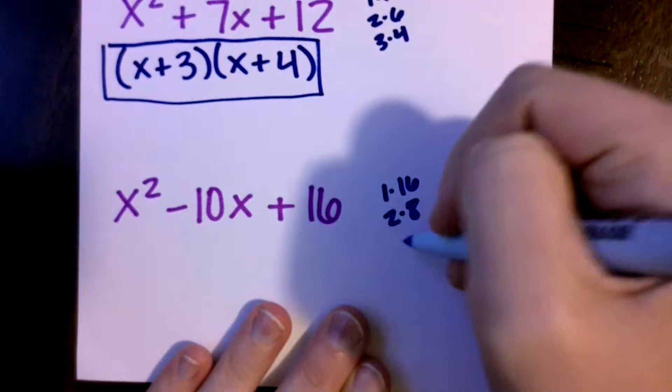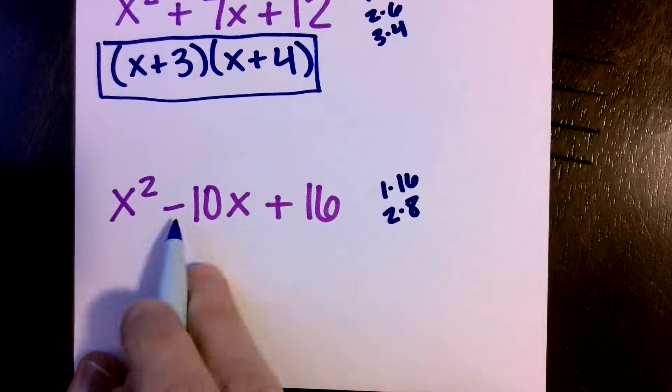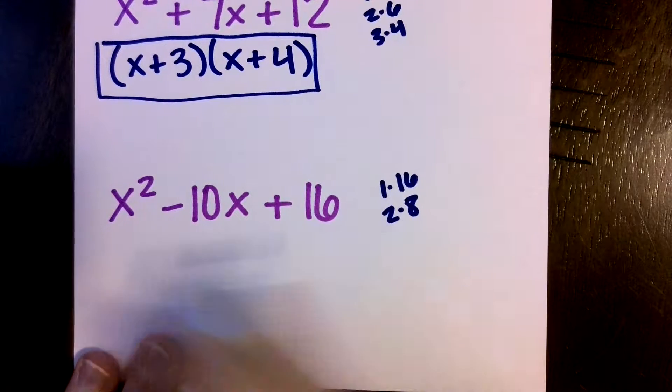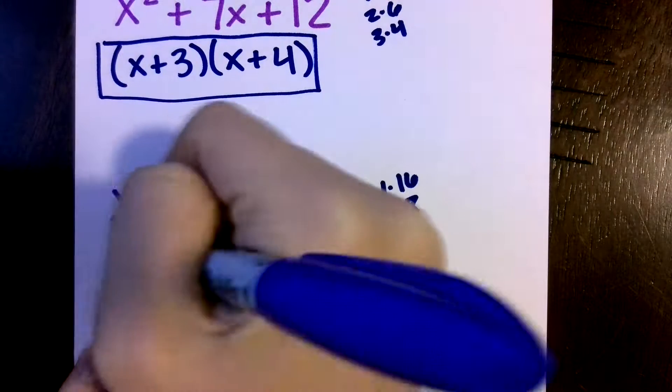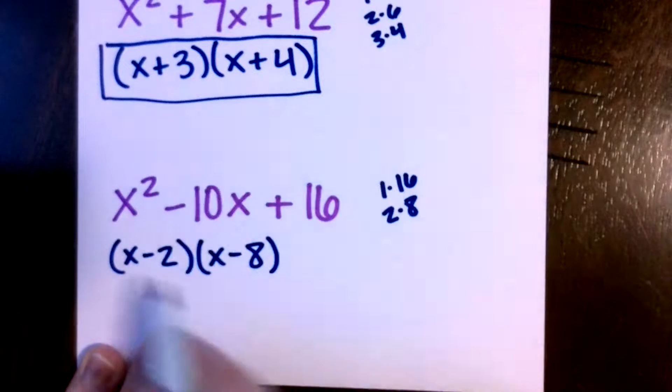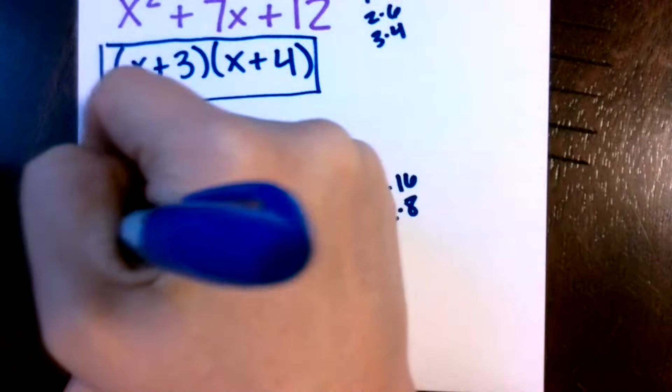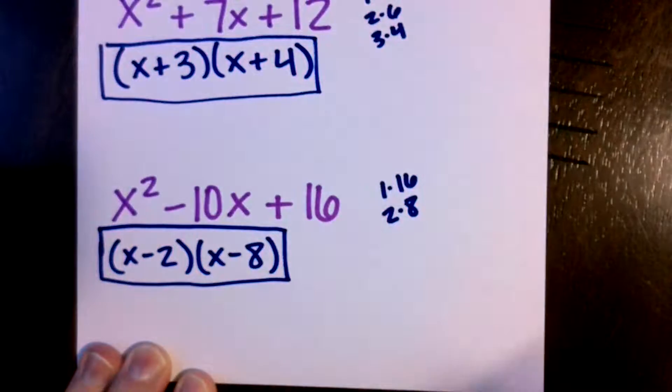We need 2, 2 and 8, that's it. 2 and 8 work, so if they're both negative, always double check. They multiply to be 16 and add to be a negative 10.